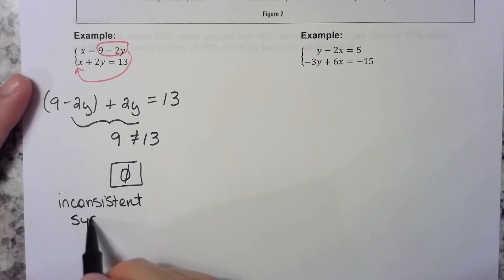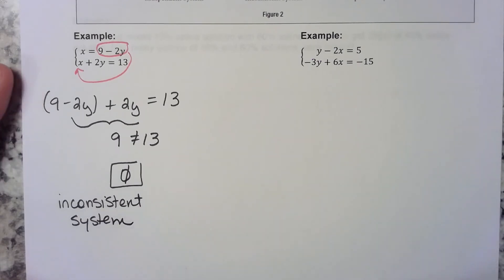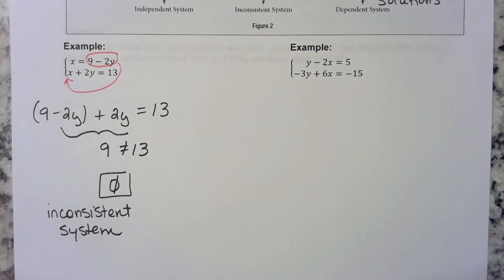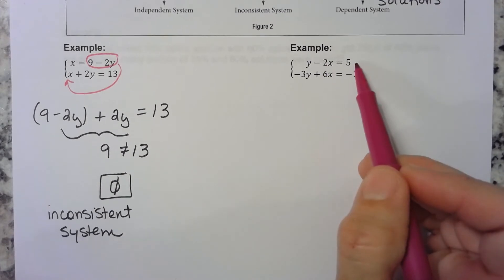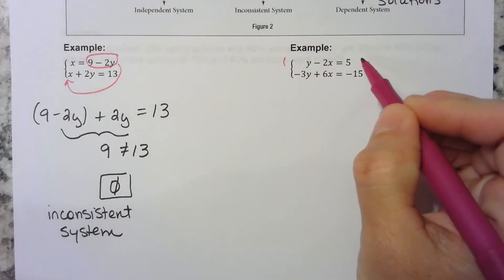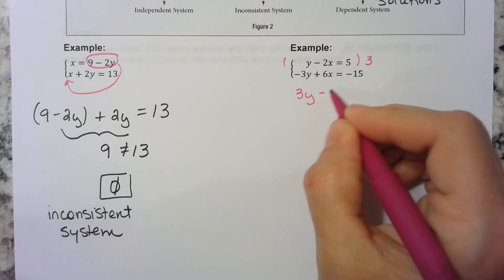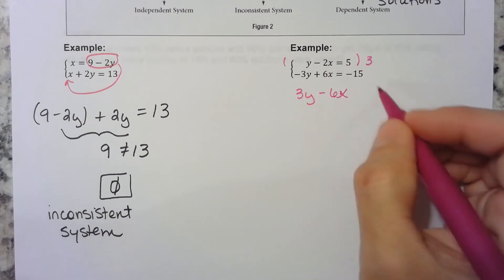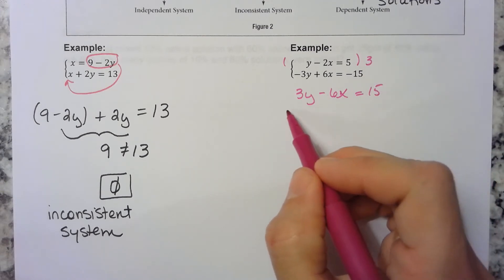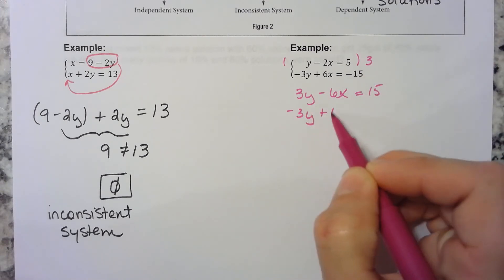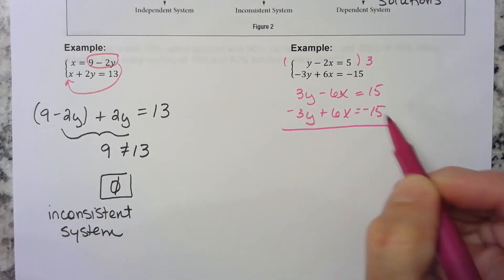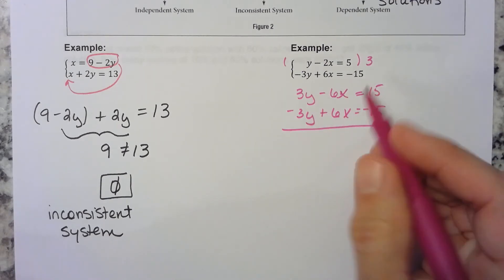Alright, what about the next one? Substitution would work because all we would have to do is move the 2x over, but I could also just multiply this one by 3, right? I would end up with 3y minus 6x equals 15. Look at that other equation. Negative 3y plus 6x equals negative 15. Well that's 0 and that's 0, so on the left we get 0. Everything went to 0.